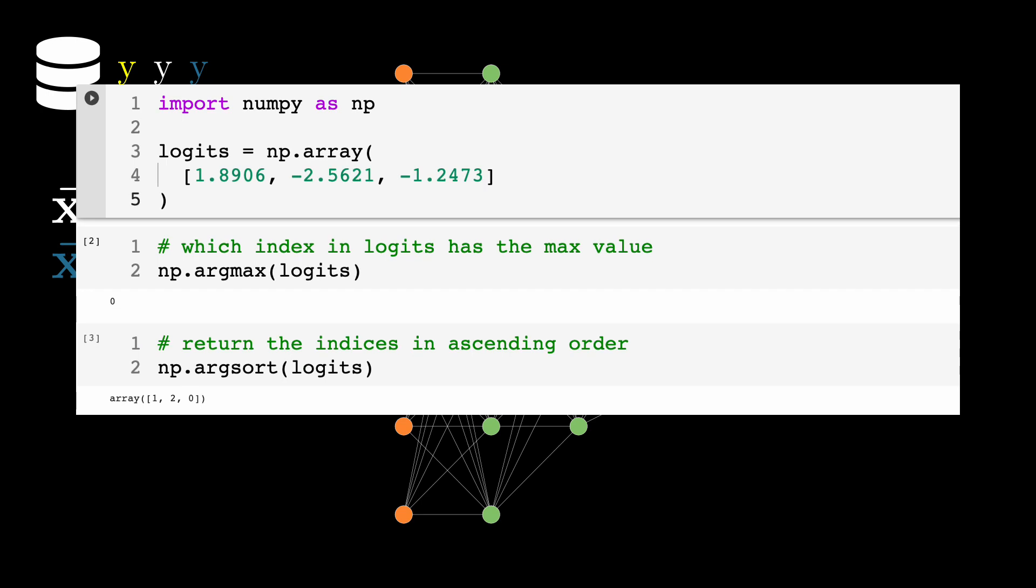But we can do better. Instead of getting the index at which we have the maximum value, we can perhaps get the list of indices that are sorted as per their values. So here the output is saying that the value at index one is the lowest, the value at index two is the second lowest and value at index zero is the highest.